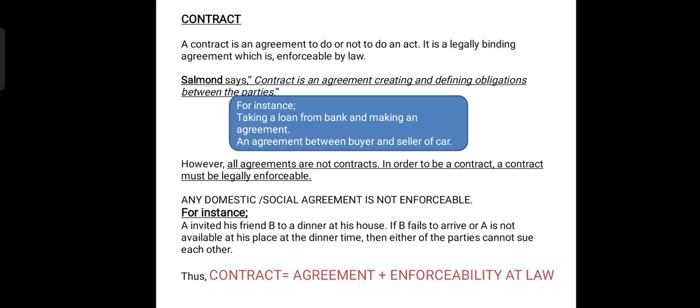So hereby you can say that the definition is rightly said by Salmond that contract is an agreement creating and defining obligations between the parties. For example, taking a loan from bank and making an agreement, an agreement between buyer and seller of a car — these all are contracts in nature. But all agreements cannot be called as contracts. In order to be a contract, there must be an essential element that it should be legally enforceable.